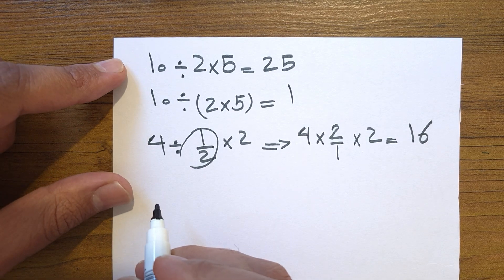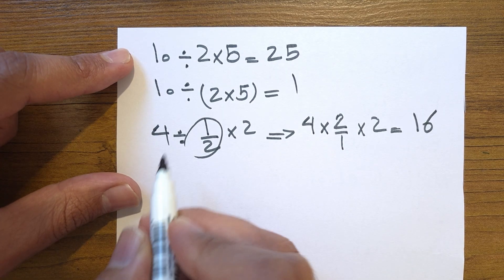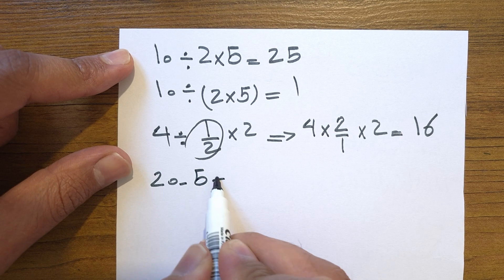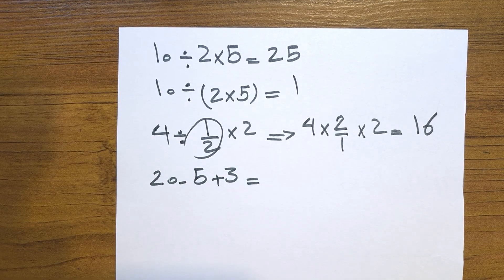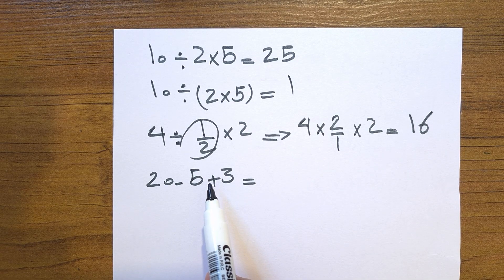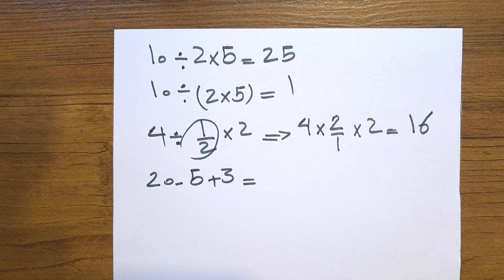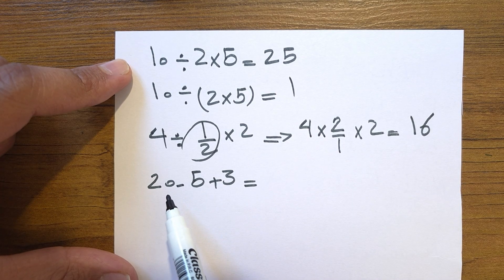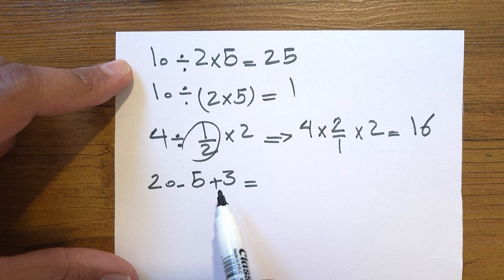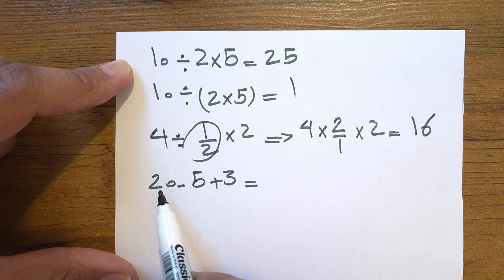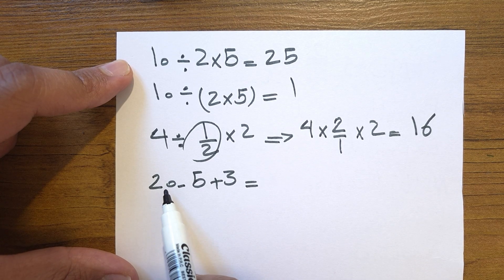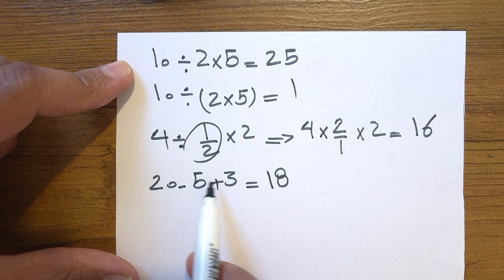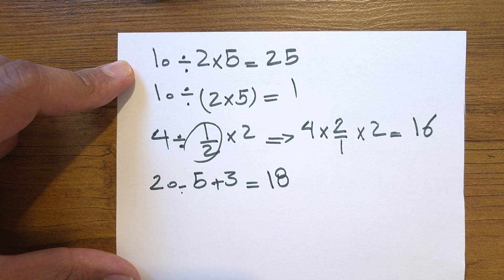PEMDAS is the important thing here. Let's cover addition and subtraction. Consider 20 minus 5 plus 3. Some students might do 5 plus 3 first to get 8, then 20 minus 8 equals 12 — but 12 is not the answer. You must go left to right: 20 minus 5 is 15, plus 3 is 18. Addition and subtraction have the same priority, so always go left to right. Similarly, 30 minus 10 minus 5: 30 minus 10 is 20, minus 5 is 15.